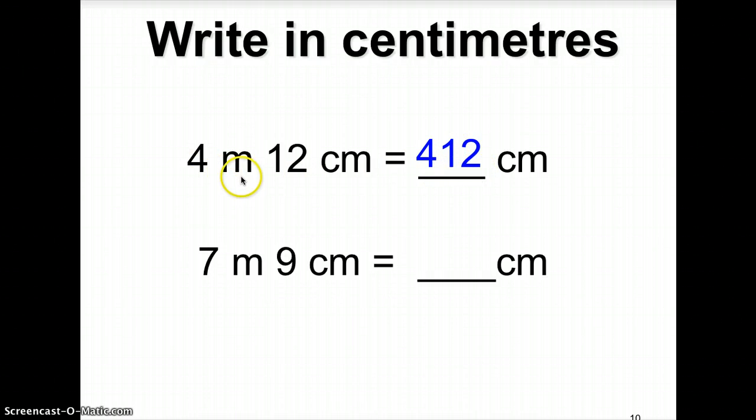Remember, just now we mentioned, in 1 meter, you will get 100 centimeters. So, therefore, in 4 meters, you should have 400 centimeters. 400 centimeters plus 12 centimeters, you will get 412 centimeters.